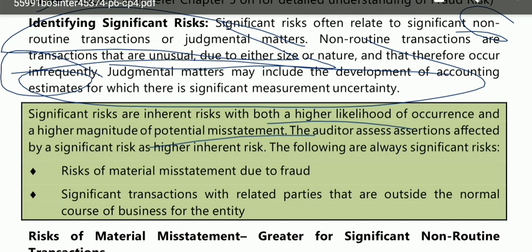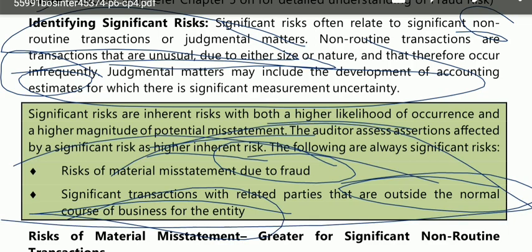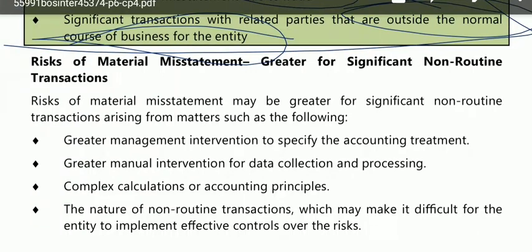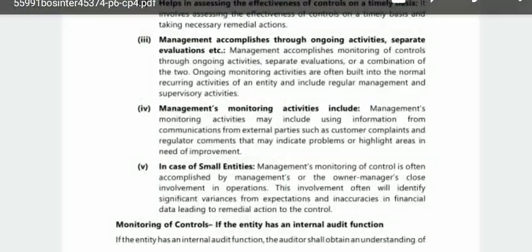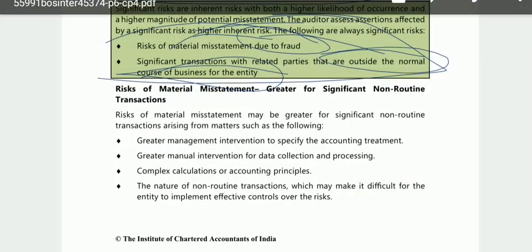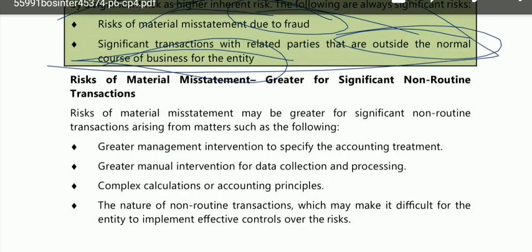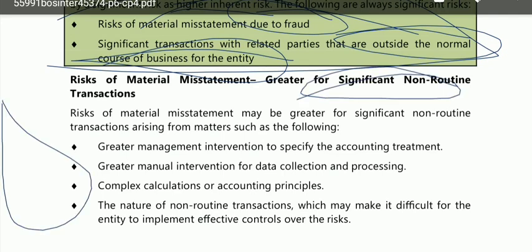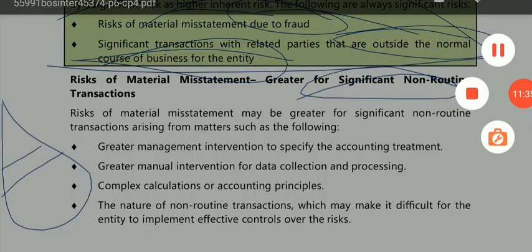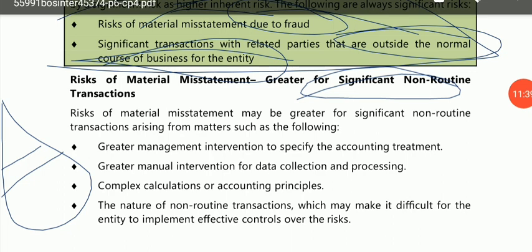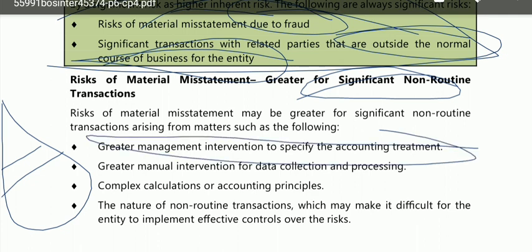The auditor assesses assertions affected by significant risk as higher inherent risk. The following are always significant risks: risks due to fraud, and risks outside the normal course of the entity. The risk of material misstatement is greater for significant non-routine transactions. In significant risks there can be levels — some more significant, some less — and risk is greatest when there is greater management intervention to specify the accounting treatment.